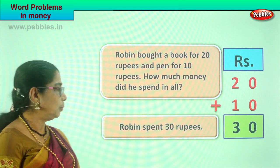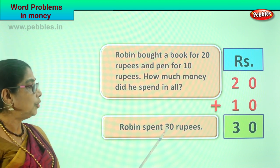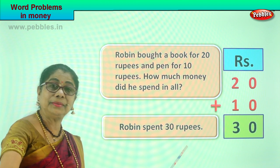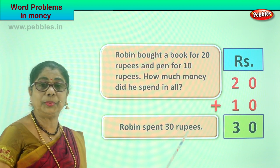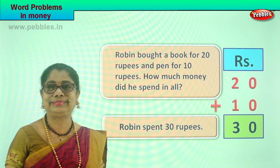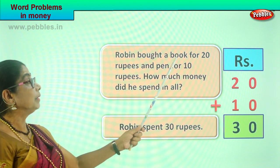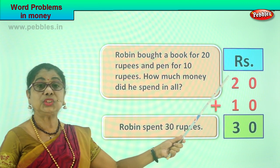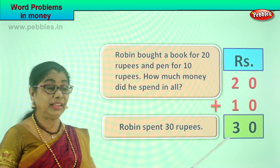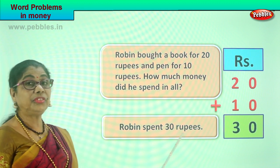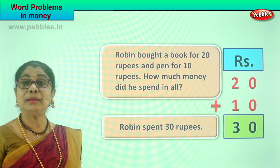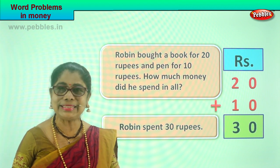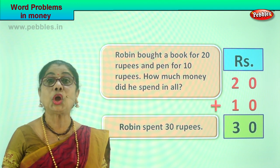How much money did he spend? 30 rupees. Robin spent 30 rupees. So mommy gives Robin 30 rupees from the purse. What is the cost of the book? 20 rupees. What is the cost of the pen? 10 rupees. 20 plus 10 is 30. Robin spent 30 rupees to buy a book and a pen. Did you enjoy the problem? Isn't it interesting and easy?